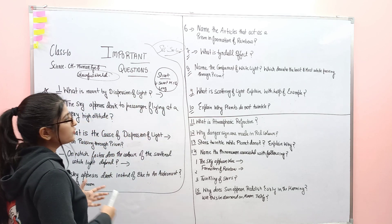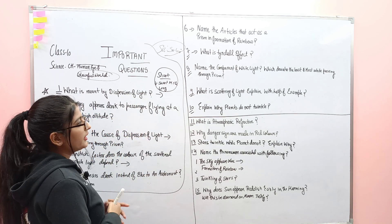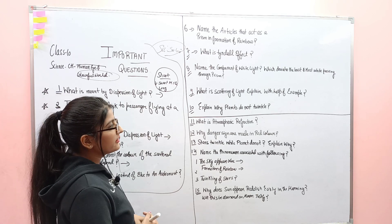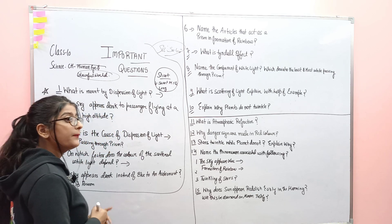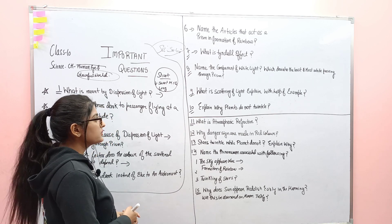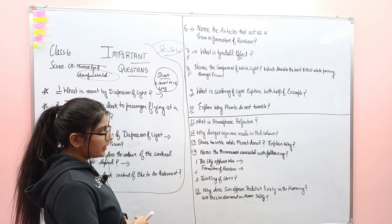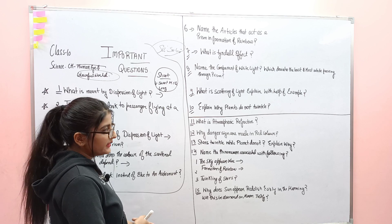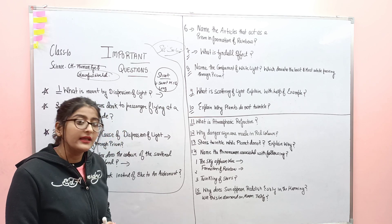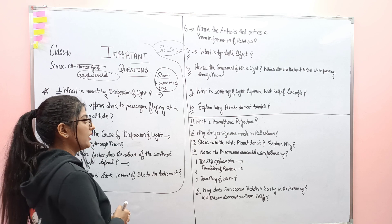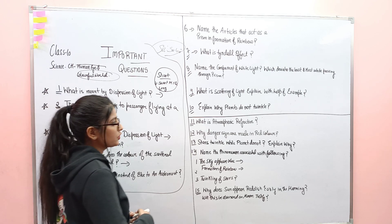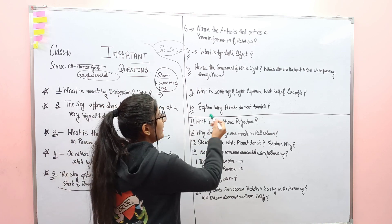Next question: name the component of white light which deviates the least and the most while passing through a prism — you have to tell that component. Next question: what is scattering of light — explain it with an example, and you also have to make a diagram for this.